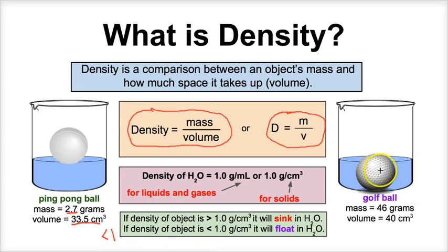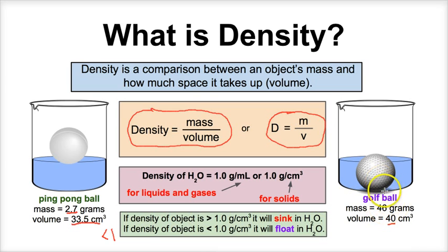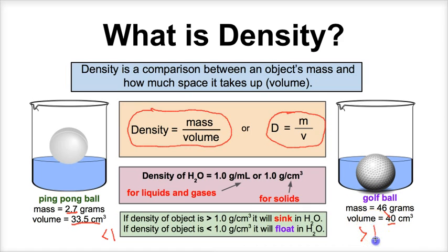If we take a look at the golf ball, its mass is 46 grams and its volume is about 40 cubic centimeters. So the golf ball is just a little bit bigger than the ping pong ball but much heavier. In order to figure out its density we take its mass divided by its volume. Since the numerator is bigger than the denominator, we're going to have a final answer that is greater than one.